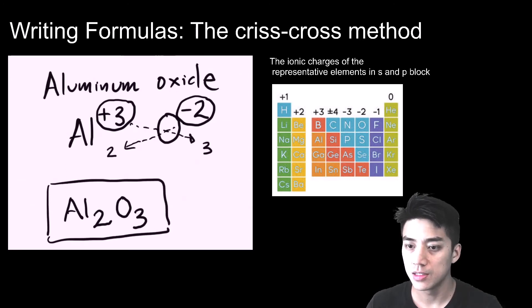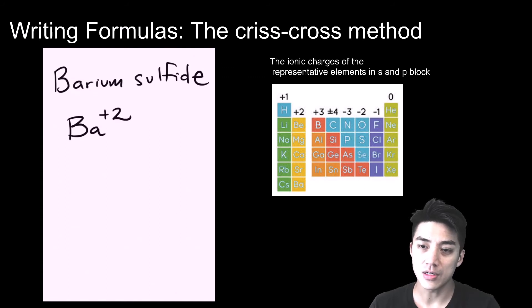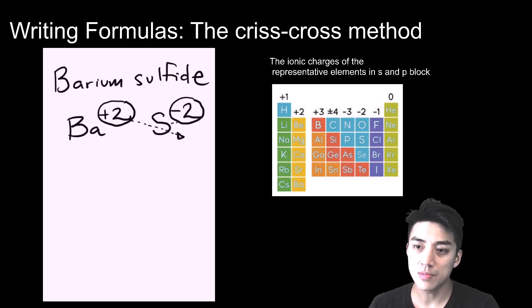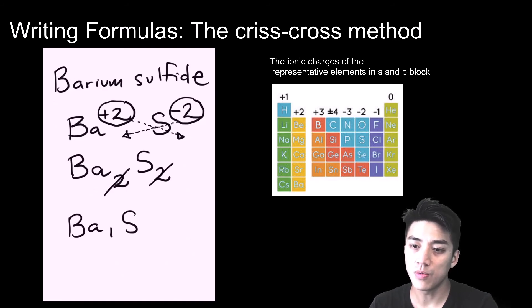Barium sulfide: symbol is Ba, charge is plus two. Sulfide is sulfur which has a negative two charge and now let's criss-cross them. It turns out the charges are the same so there's a rule where we simplify the charges. Let's first write it out, Ba2S2. Because the charges are the same the two to two ratio simplifies to one to one so it's Ba1S1, and remember we omit the ones so it's just BaS.